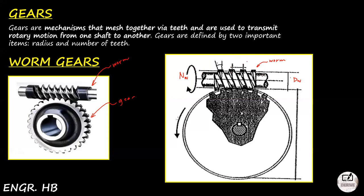Since this is a worm gear — it's like a combination of a gear plus a threaded member — this worm gear is threaded. That's why it is a combination of gears and a threaded member topic. The worm gear has a pitch distance. It's similar to single-threaded, double-threaded, triple-threaded concepts. The lead L equals P for single, 2P for double, 3P for triple, and so on.